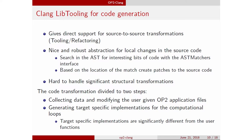For this, we use Clang's lib tooling, which gives direct support for source-to-source translation. This library gives us the AST matchers interface, which is quite nice and robust for simple local transformations. Basically, we build up the AST, search in the AST, find interesting bits of code, and then we can write a replacement for the source code corresponding to the AST part that we find. However, handling significant structural changes in the source code is quite hard to manage.